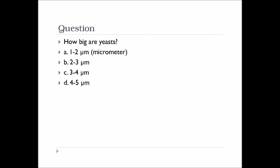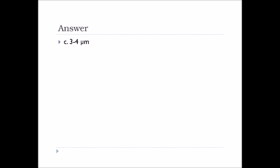How big are yeast? A: 1 to 2 micrometers, B: 2 to 3 micrometers, C: 3 to 4 micrometers, D: 4 to 5 micrometers. The answer is C: 3 to 4 micrometers.